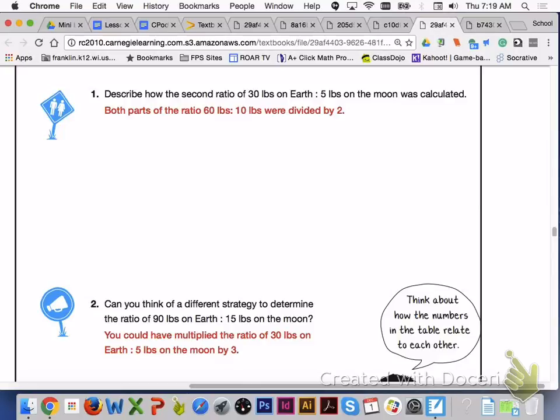For number 2, one thing that you could have done was multiplied the ratio of 30 pounds on earth to 5 pounds on the moon by 3. Your scaling up factor would be 3.